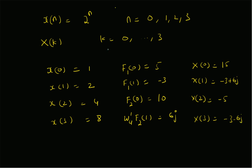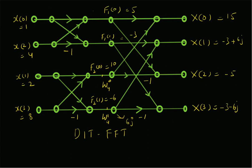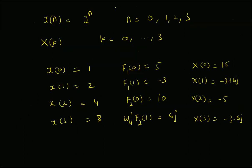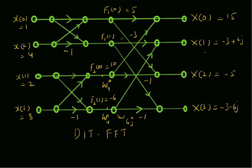To summarize, we used the DIT-FFT algorithm to find the four-point DFT of x(n) = 2^n for n = 0 to 3, using the butterfly diagram. The stage 1 outputs are f1(0) = 5, f1(1) = −3, f2(0) = 10, f2(1) = −6, and after applying W4^1 the stage 2 inputs become 5, −3, 10, and 6j. The final DFT outputs are: X(0) = 15, X(1) = −3 + 6j, X(2) = −5, and X(3) = −3 − 6j. Thanks for watching!